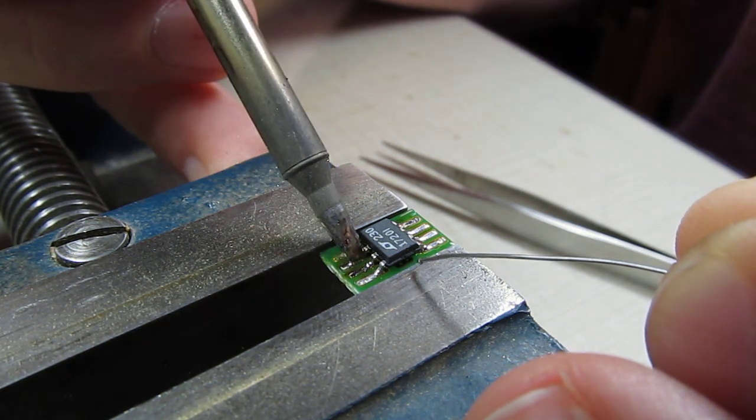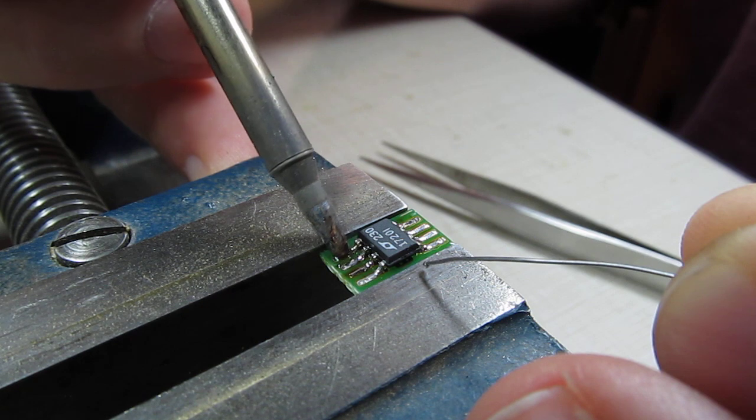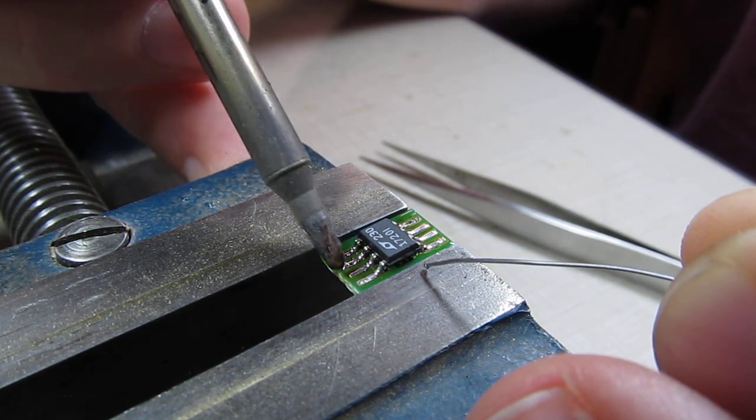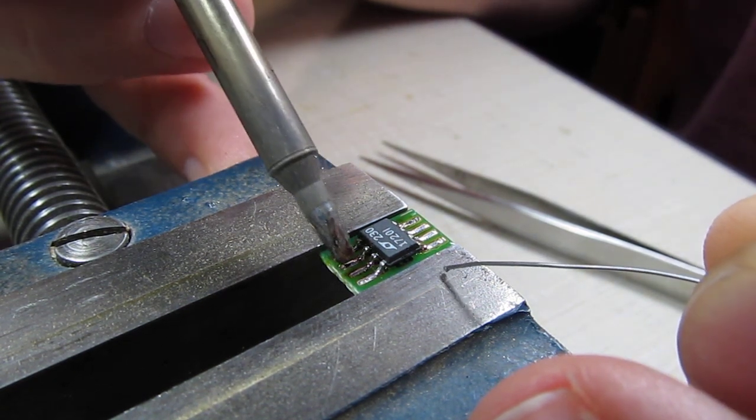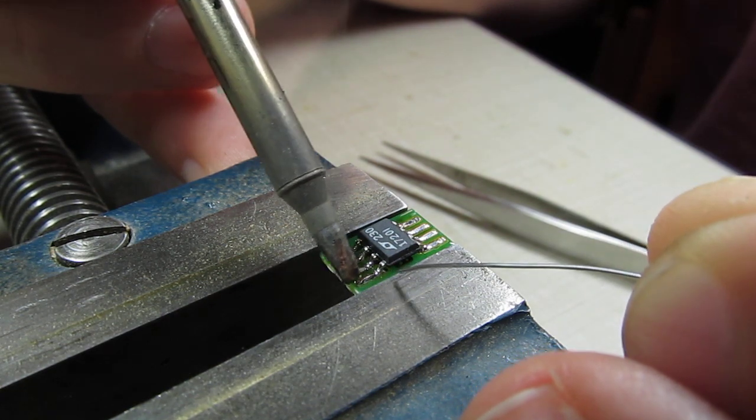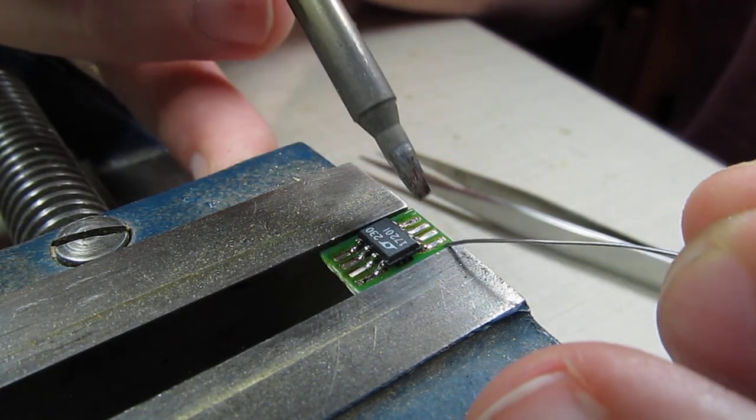The flux is doing a nice job in helping to keep the solder contained. Without the flux sometimes you'd get solder bridges, but the flux really helps to keep the solder all balled up and wetted together.